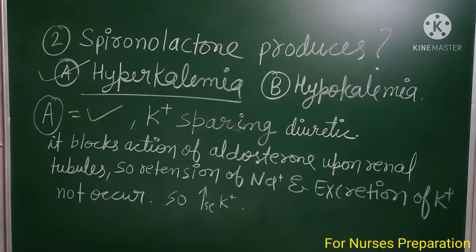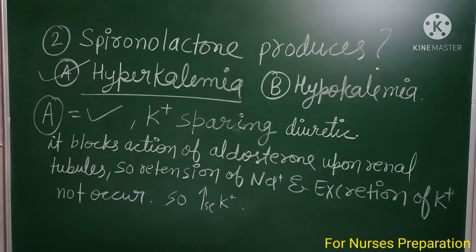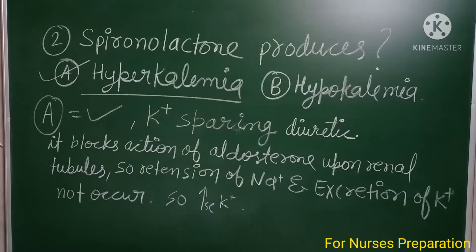All students in clinical practice should know this. Lasix or Frusemide is also a very commonly used diuretic medicine. Diuretics are often used to maintain high BP. Spironolactone is a potassium-sparing diuretic that blocks the action of aldosterone upon renal tubules, so retention of sodium and excretion of potassium does not occur. Due to this, potassium level increases in the body and hyperkalemia develops.